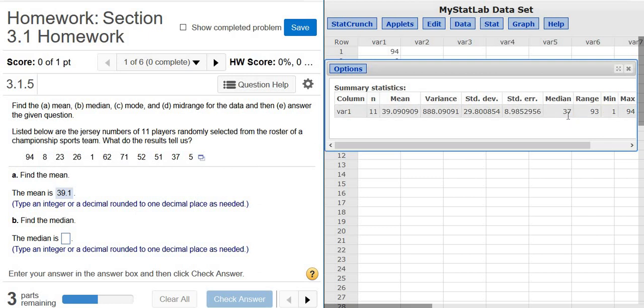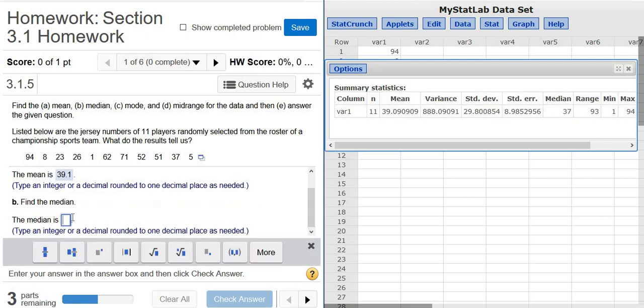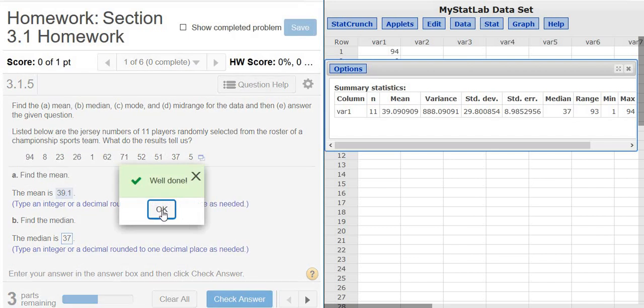The median. The median is 37. The median is the middle number when the data is ordered. It's called the median. Good stuff.